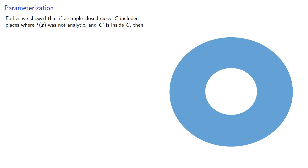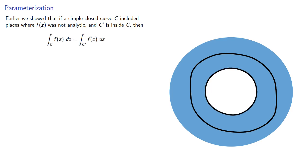Now earlier we showed that if a simple closed curve C included places where f of z was not analytic and C' is inside C, then the integral around C is the integral around C'. We can contract our curve, in other words.